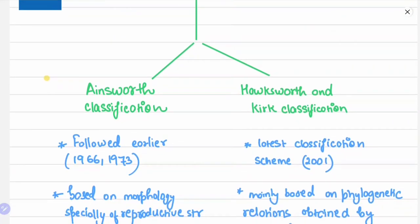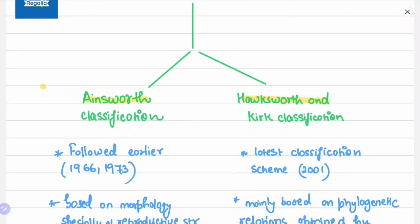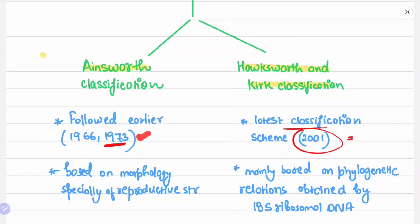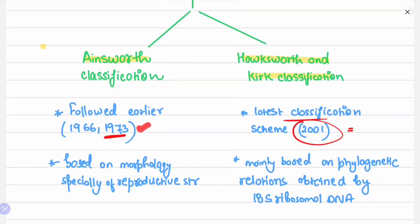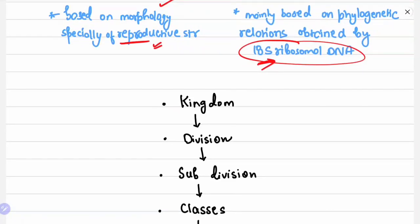First, I've given the difference between Ainsworth classification and Hawksworth and Kirk classification. The Ainsworth classification was followed in 1966 and 1973, and Hawksworth and Kirk is the latest classification scheme. Ainsworth's scheme was based on morphology, especially of the reproductive structure, while Hawksworth and Kirk is focused on 18S ribosomal DNA. We will study Hawksworth and Kirk in the next video.